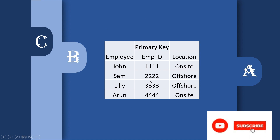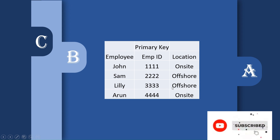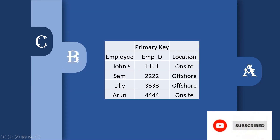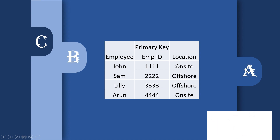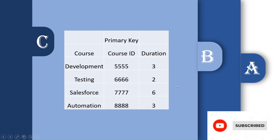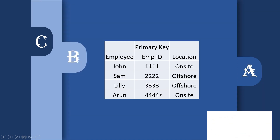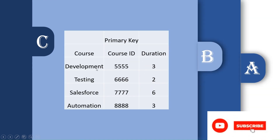Let's take two tables — consider them as objects from a Salesforce perspective. The first table is an Employee table with employee name, employee ID, and location. The second table is a Course table with course name, course ID, and duration — how many months a particular course will take for an employee to complete.